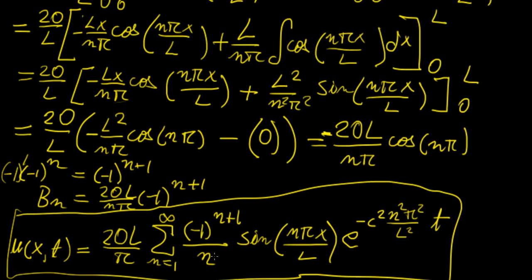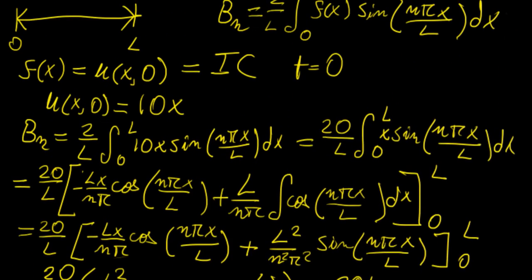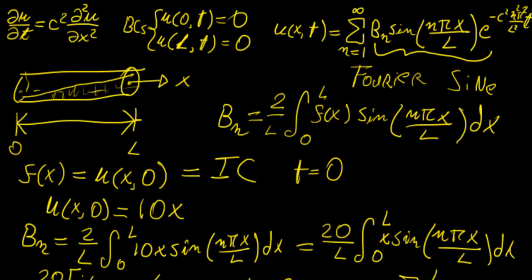For each value of n — n being an integer — we get a different solution, and this expression encapsulates all those infinite solutions to the problem. This is a really nice application of Fourier series to completely solve a simple partial differential equation like the heat equation.